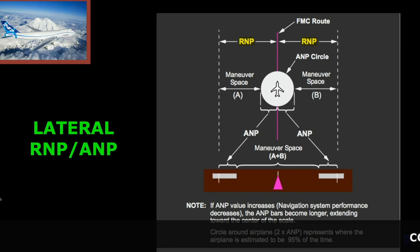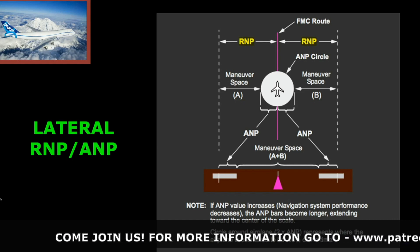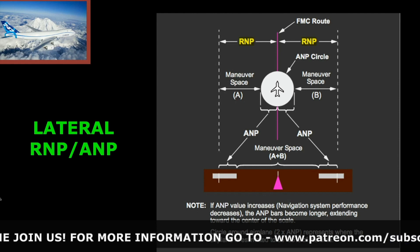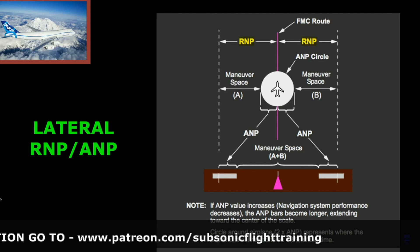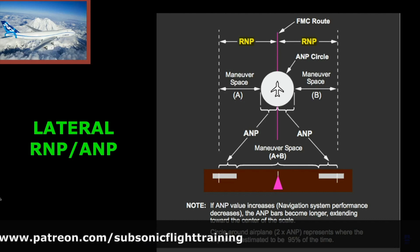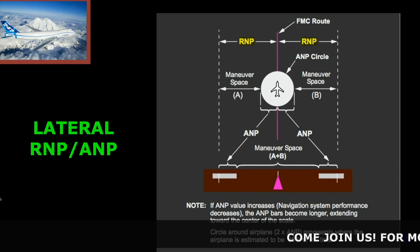Here's a representation of what the lateral RNP and ANP represents. The airplane has an area around it called the ANP circle — the Actual Navigation Performance Circle. That's where the FMC looks at its navigational accuracy and places you within a 95% accuracy within that circle. The RNP is the required navigation performance for the airspace you're in.